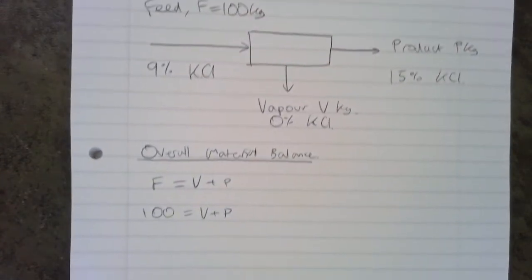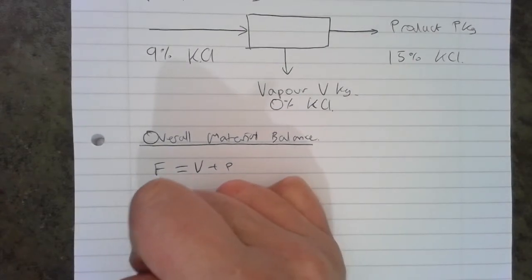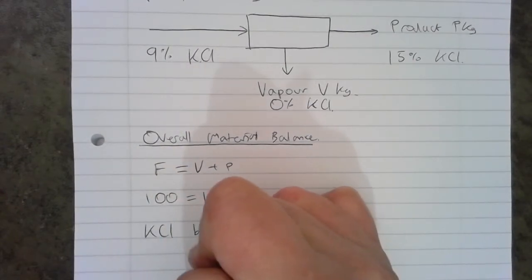We then need to do a component balance. There's two components here: water and KCl. And so because there's only two components, we just do one component balance. So we'll do a KCl balance.